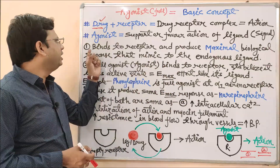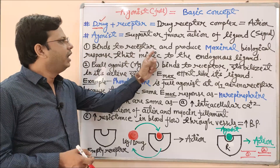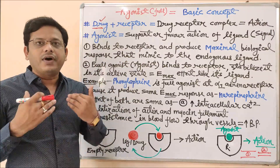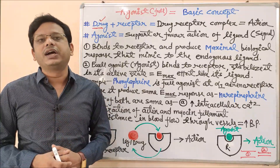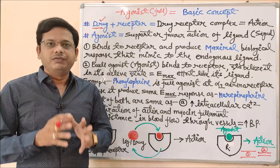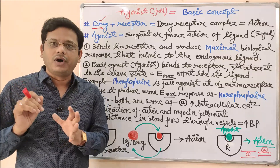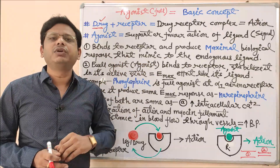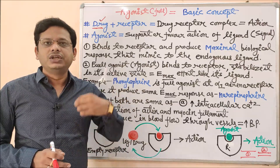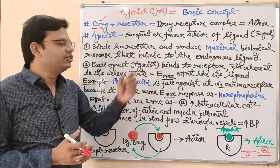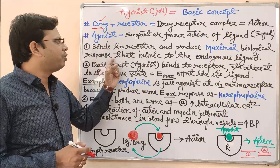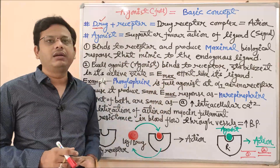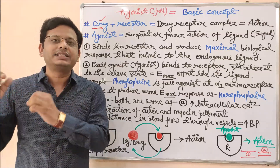It is necessary to work the same as the signal molecule and the result should be of maximum value. An agonist binds to the receptor and produces a maximal biological response. Maximal biological response means — just as I myself would teach pharmacology to its fullest, someone with the same quality will produce the same effect, same result, and same satisfaction in students' minds. This is called a maximal effect. Agonists also mimic the endogenous ligand — mimicking means trying to duplicate or replicate the original.